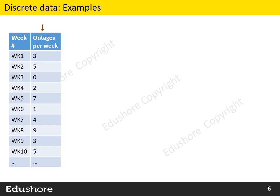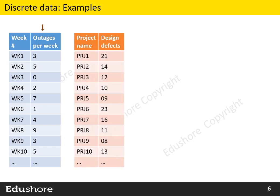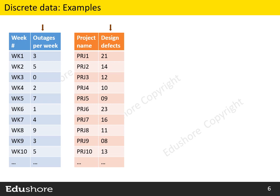Another example: we capture the number of design defects for each project. Since the data consists of whole numbers that are counted, it is discrete data.